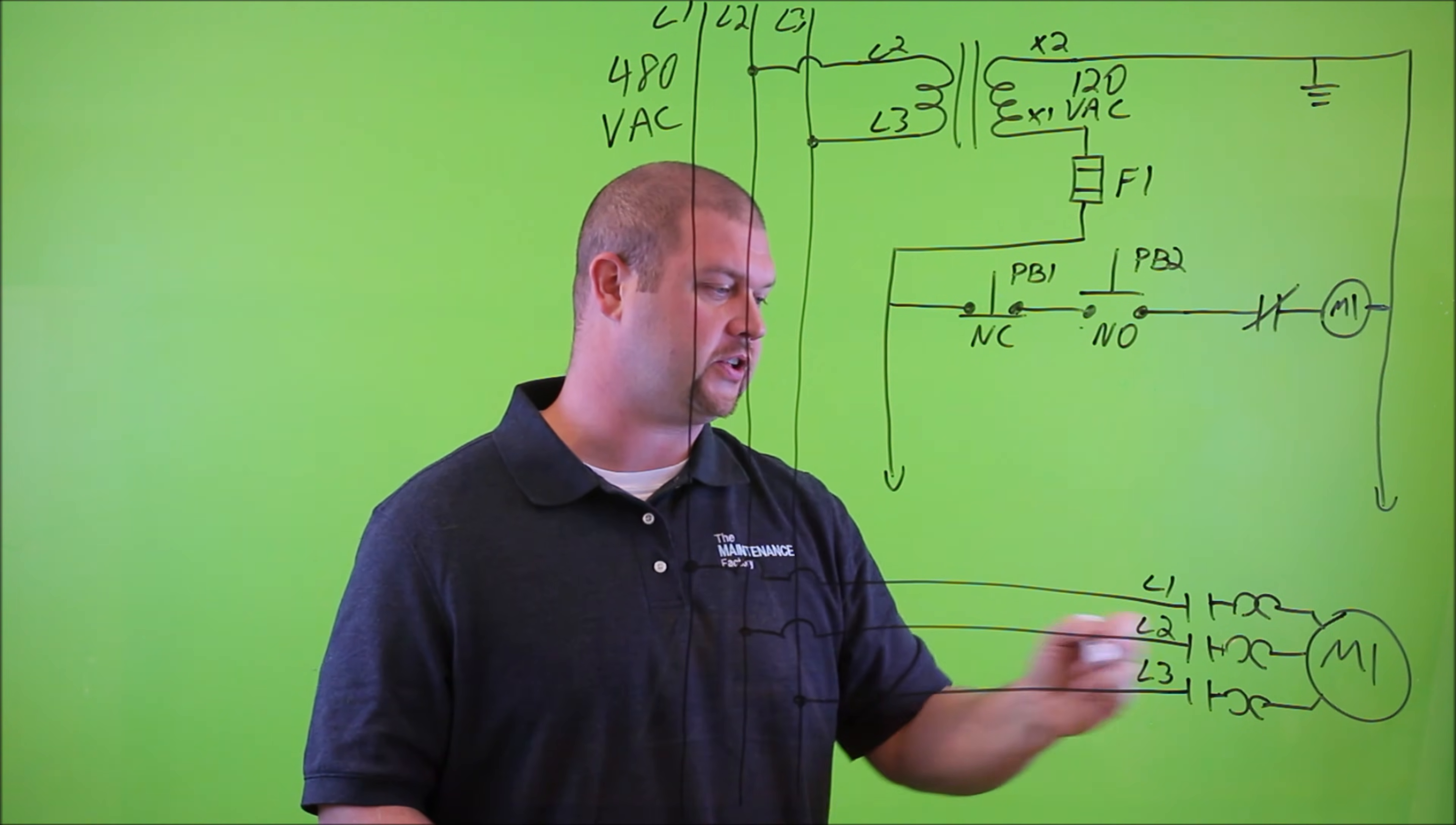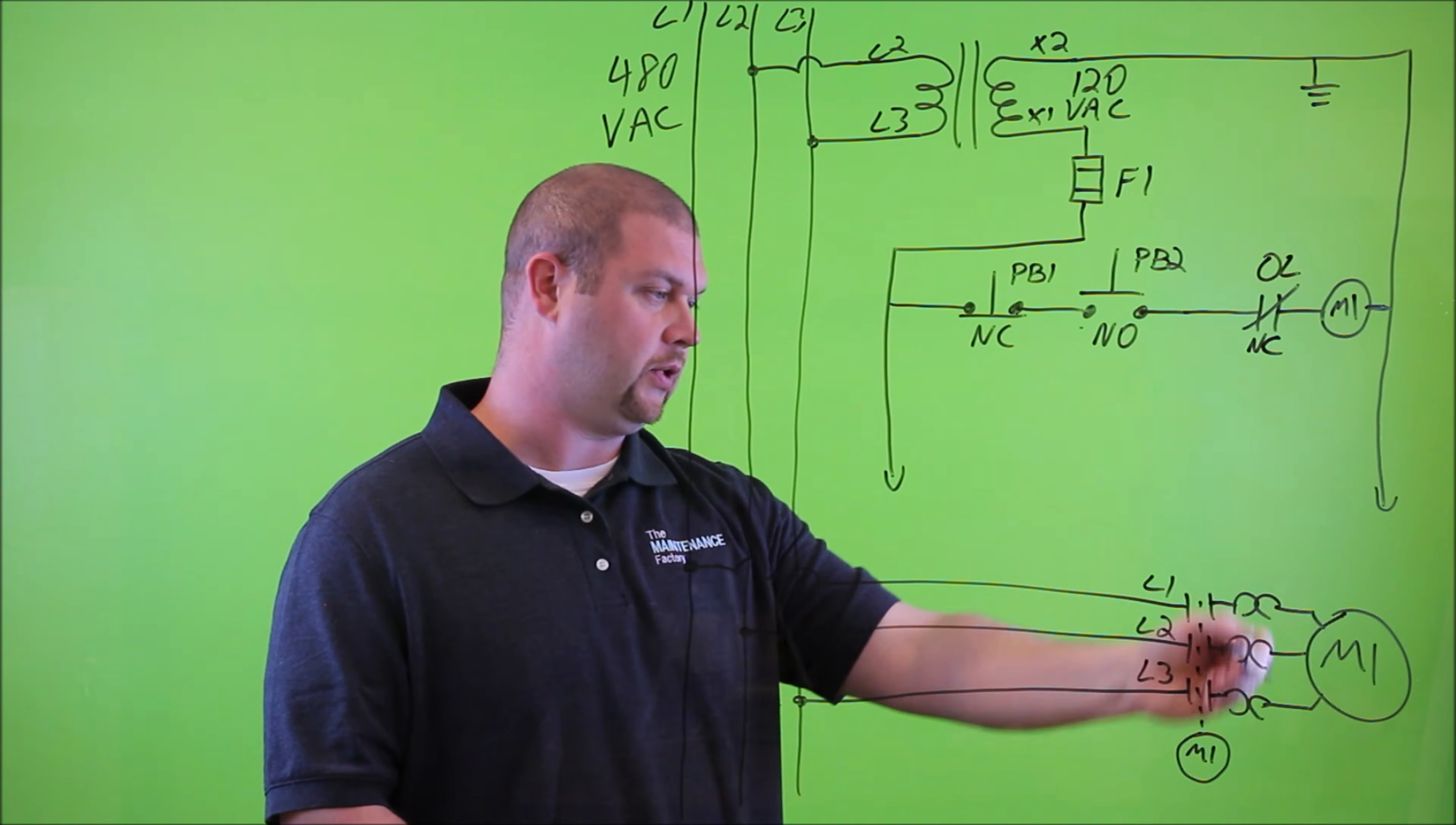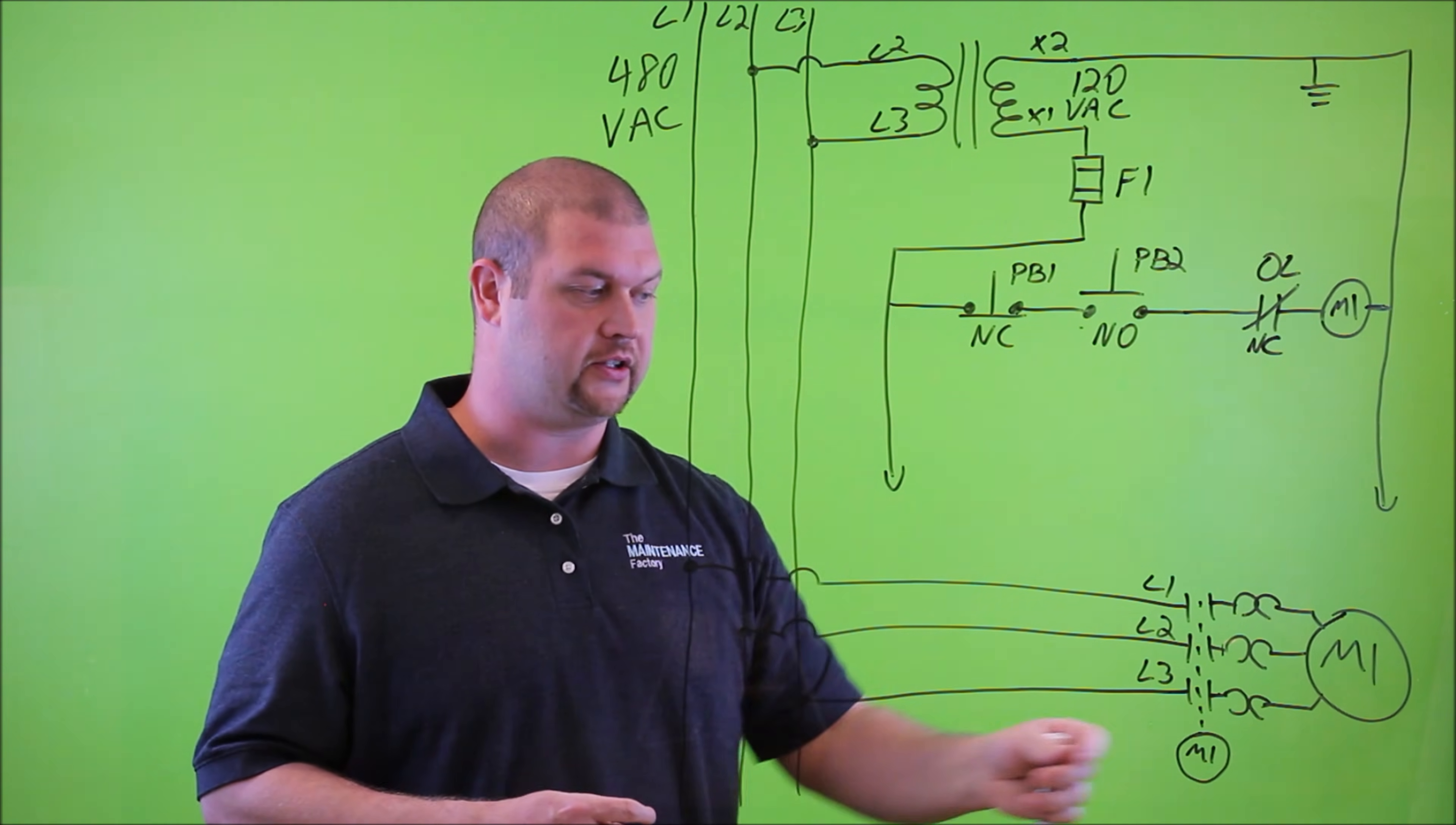Now, up here we have our control power transformer, which is connected to L2 and L3. It's taking 480 volts AC, and it is stepping it down to 120 volts AC, and then that 120 volts AC is what we're going to use to control the state or the condition of this contactor. Now, we have the coil that's going to control this contactor, and there's some physical connection between this coil and these three contact points here. And then we have the normally closed button. And it's related to this overload portion right here. And then we have our stop button, which is normally closed, and it's labeled as PB1. And then we have a start button that is normally open, and it's labeled PB2.